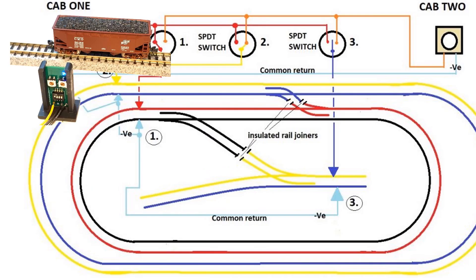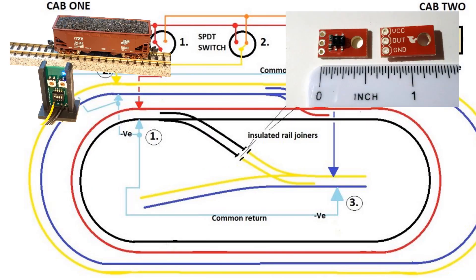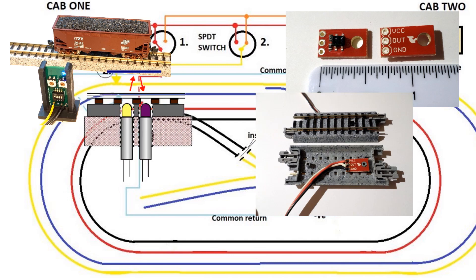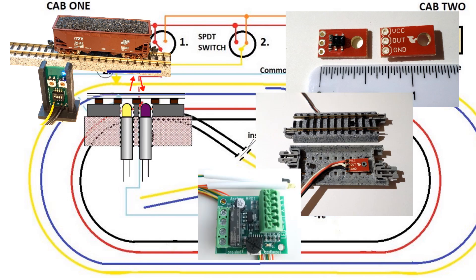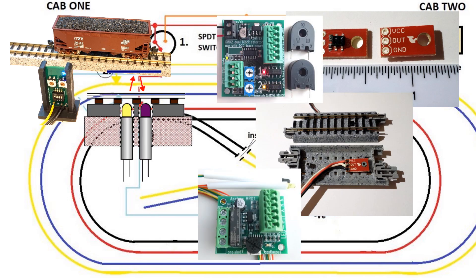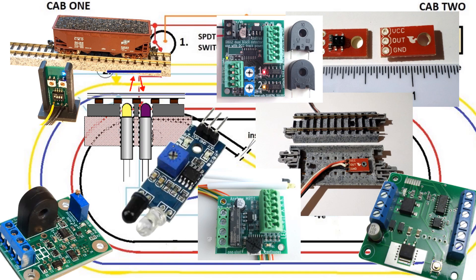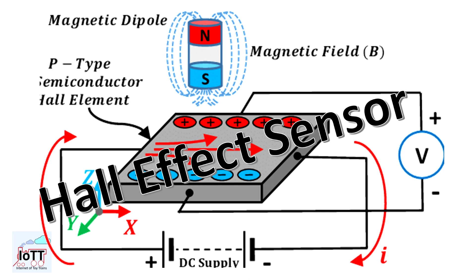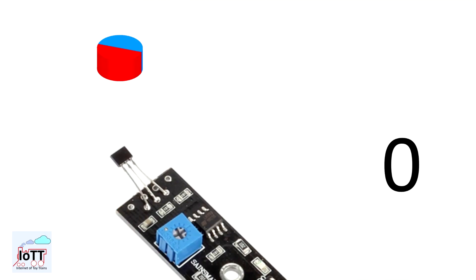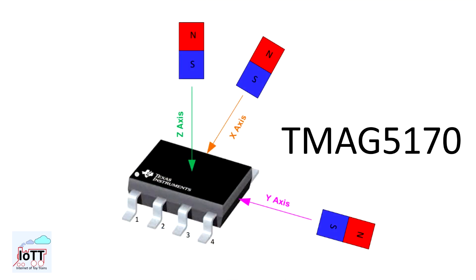Sensors of all kinds are a key element when it comes to layout automation, and there are plenty of videos on YouTube about using infrared sensors, current sensors and the like. Hall effect sensors on the other hand appear to be the model railroader's red-headed stepchild, and this for valid reasons: they need a magnet for activation and can only switch on and off.